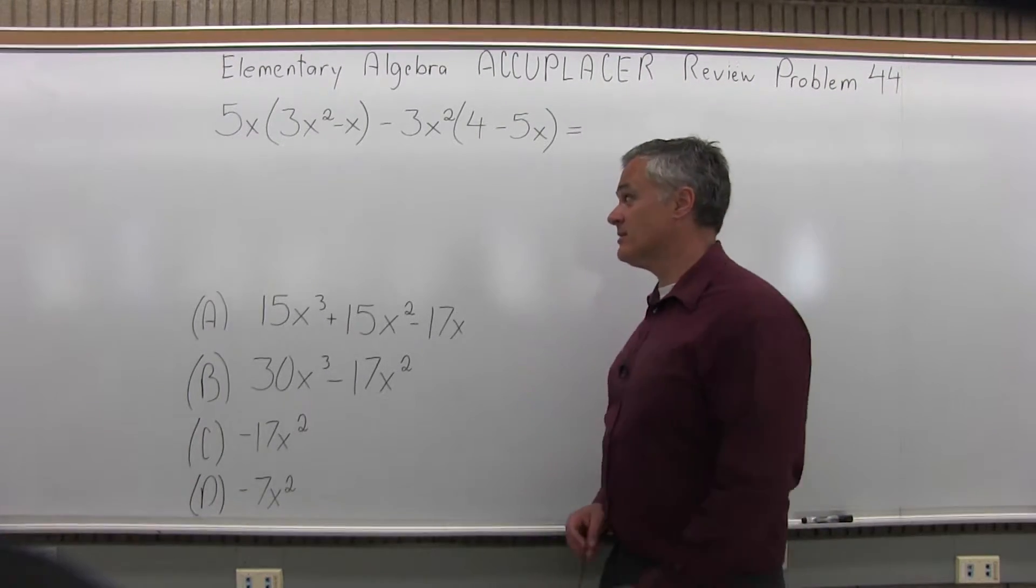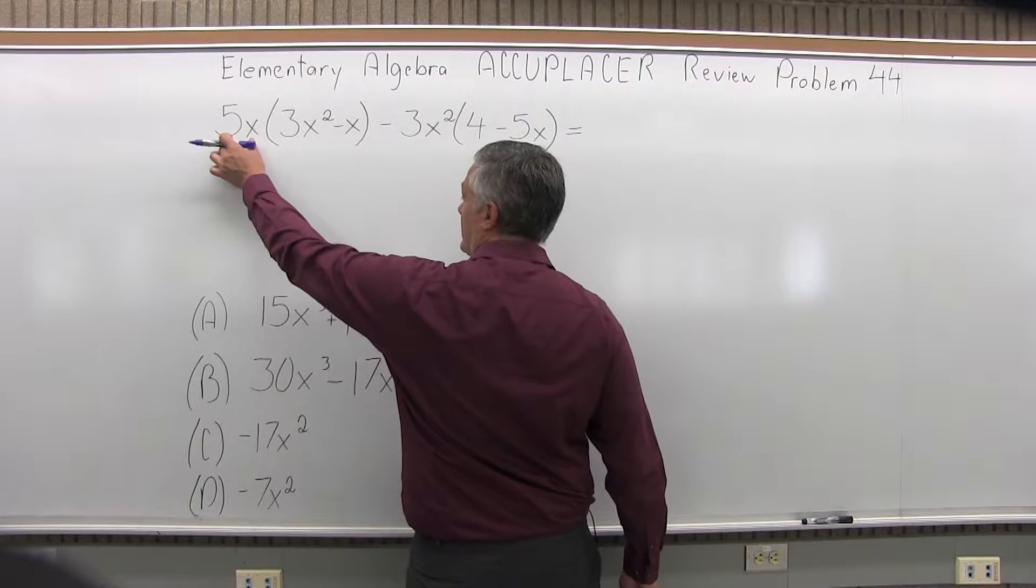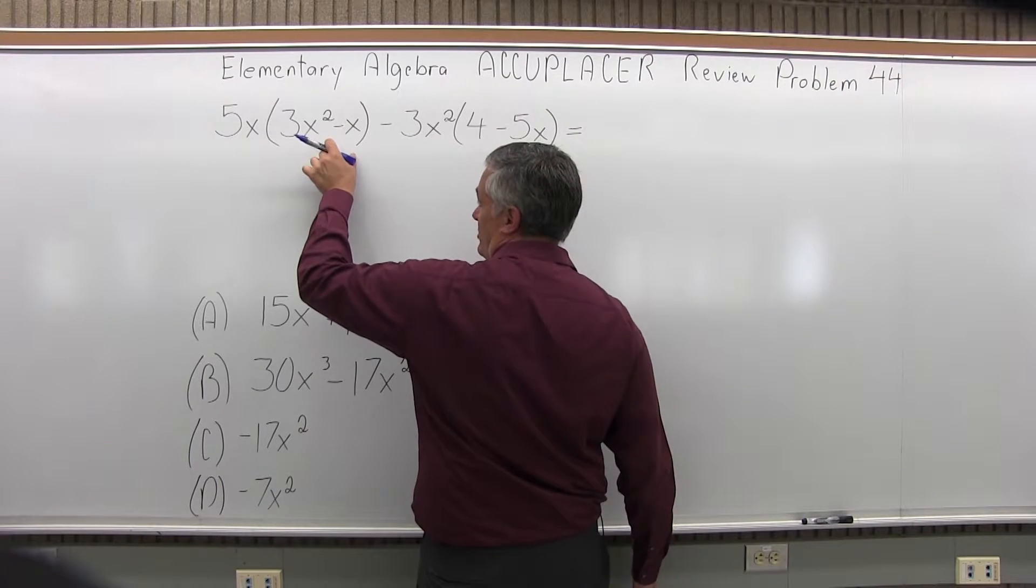And we want to see what that will simplify to. So what I'm going to do is start by multiplying whatever's outside of the parentheses times each item inside the parentheses.